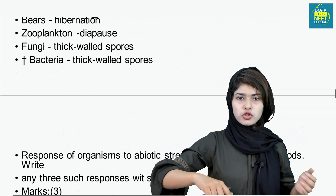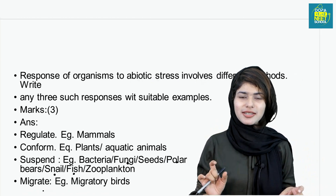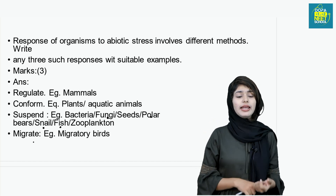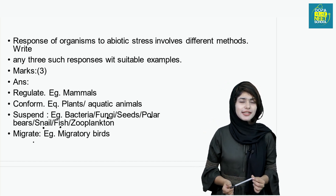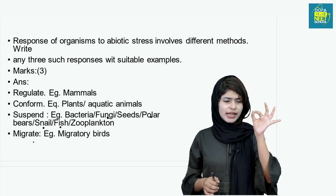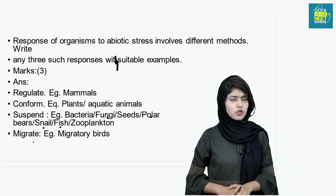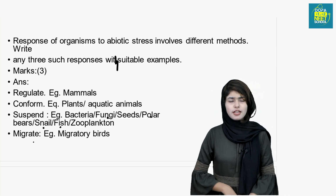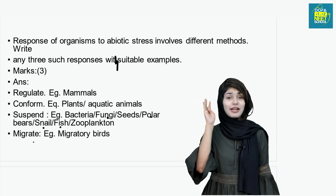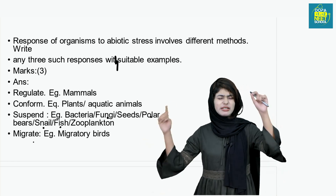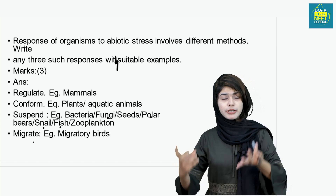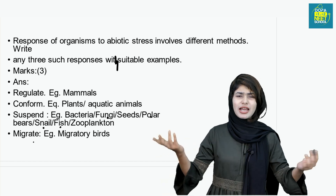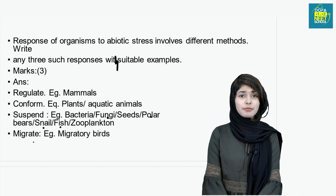This is a 3-mark question. Response of organisms to abiotic stress involves different methods — write any 3 such responses with suitable examples. The responses are: regulate, conform, suspend, migrate. Regulate — example: mammals. Conform — example: plants and aquatic animals. Suspend — example: fungi, bacteria, seeds, snails. Migrate — example: migratory birds.